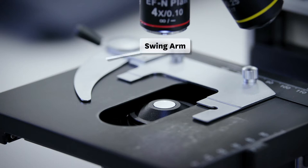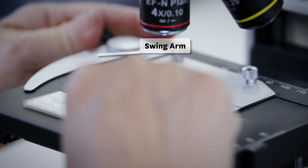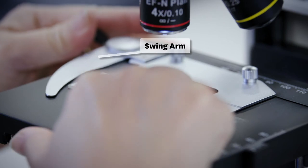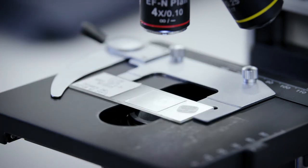Gently open the swing arm and place a prepared slide onto the stage. Make sure the slide is secured with the swing arm holding it in place.